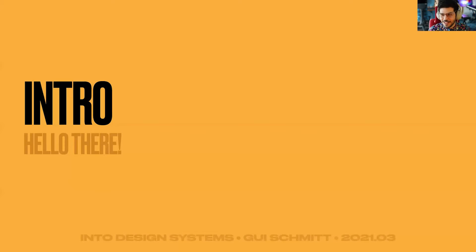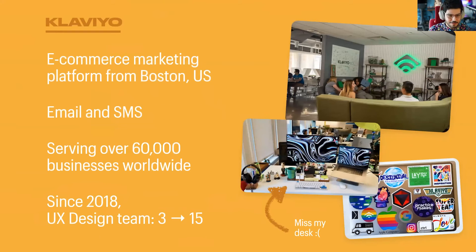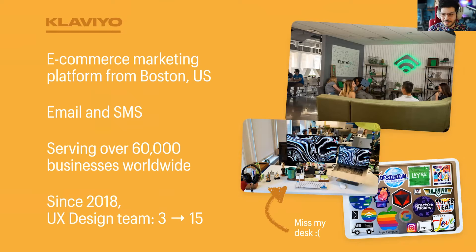First, an intro. I'm Guy. I'm a product designer at Klaviyo. I'm originally from Porto Alegre, Brazil. Before Klaviyo, I worked as a consultant focused on mobile apps at Accenture, and I also worked at a game company studio in Brazil called Akiris. Our design team has grown quite a bit since I joined — I was the third designer, and now we're over 15, so we've scaled quite a bit.